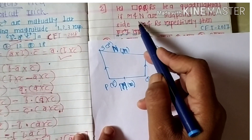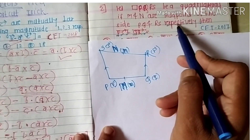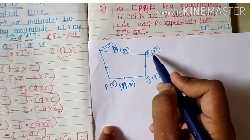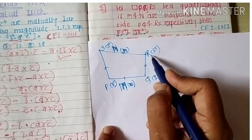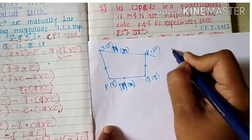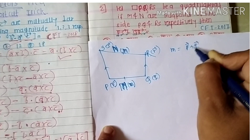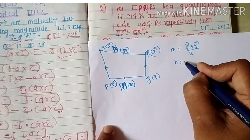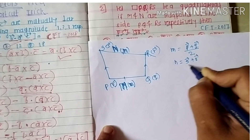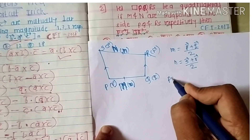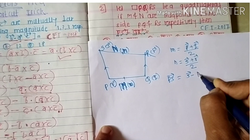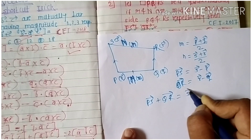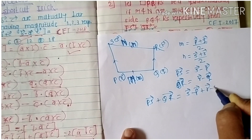Next problem: PQRS is a quadrilateral. M and N are midpoints of sides PQ and RS respectively. We have to find PS̄ + QR̄. M is the midpoint of PQ and N is the midpoint of RS, so by the midpoint formula: m̄ = (p̄ + q̄)/2 and n̄ = (s̄ + r̄)/2. Using the distance formula: PS̄ = s̄ − p̄, so PS̄ + QR̄ = (s̄ − p̄) + (r̄ − q̄).